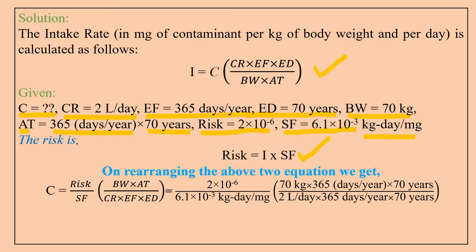We use both equations 1 and 2, and rearrange them in terms of C, which we need to find out. C is equal to Risk × BW × AT, divided by SF × CR × EF × AD.